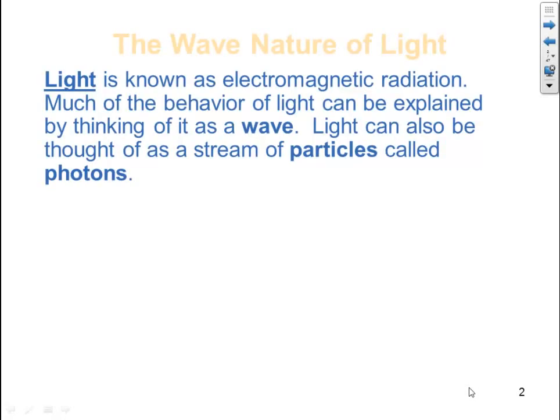Light is known as electromagnetic radiation. Much of the behavior of light can be explained by thinking of it as a wave. Light can also be thought of as a stream of particles called photons. We will discuss both of these terms later on in this chapter.